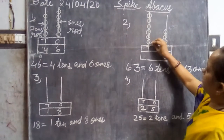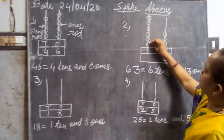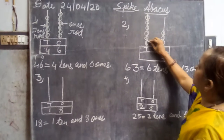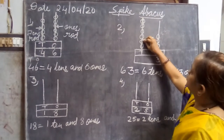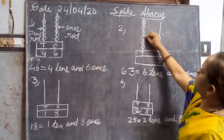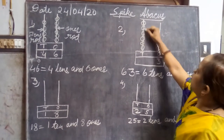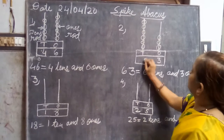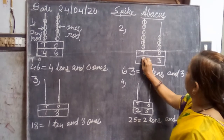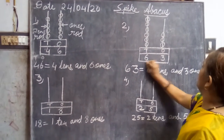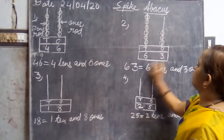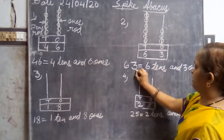Now for tens place, which number do we have to write? Just count with me: one, two, three, four, five, six. So we are going to write here six. The number formed is sixty-three.